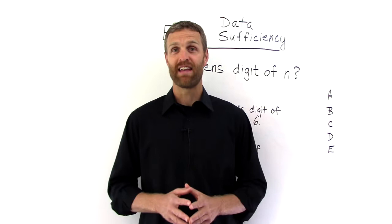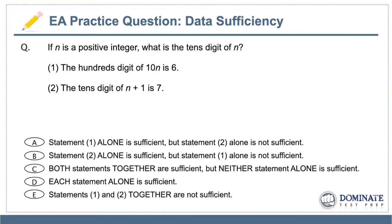So here's the data sufficiency question. The question stem is very clearly asking, what is the tens digit of n? Well, I don't know. What is n? It's a variable. Okay, fine. We are told that n is a positive integer. File that away. And then you have your two statements. Go ahead and press pause. I'll give you a second to try it on your own, and then we'll come back and talk about it together. Go ahead and press pause.